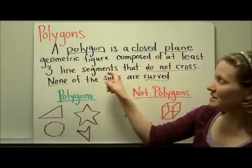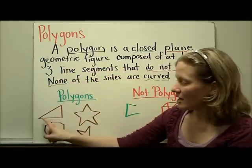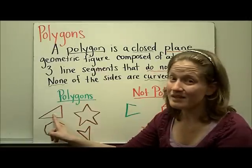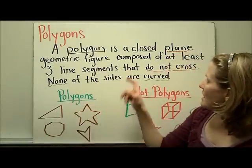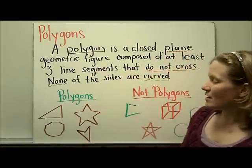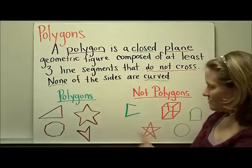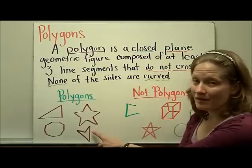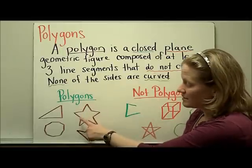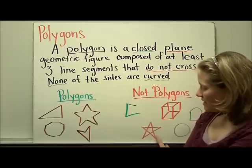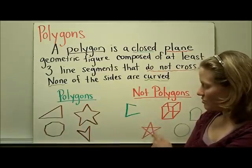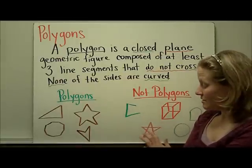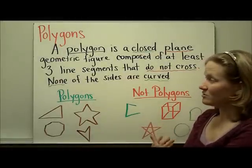At least three line segments — so a triangle is the polygon with the least amount of line segments — and they do not cross. You can see these two stars here. This one is considered a polygon because the line segments never cross. In this one, you can see that the line segments cross, and even though this is a closed shape, it's not considered a polygon because they're crossing.